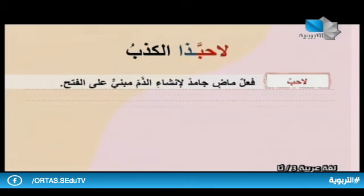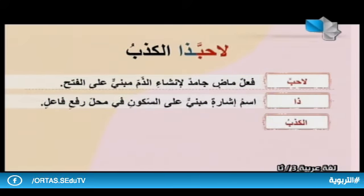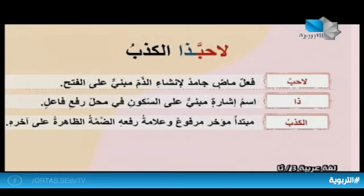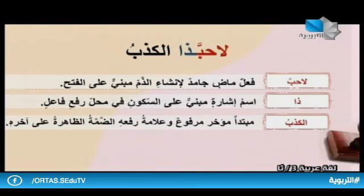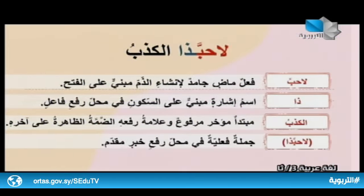أما في إعراب لا حبذا الكذب فنقول: لا — حرف نفي. حبَّ — فعل ماضٍ جامد لإنشاء الذم مبني على الفتح. ذا — اسم إشارة مبني على السكون في محل رفع فاعل. الكذب — وما قلناه في إعراب المخصوص مع نعم ينطبق على المخصوص مع حبذا، فهو مبتدأ مؤخر مرفوع، وجملة لا حبذا جملة فعلية في محل رفع خبر مقدم.